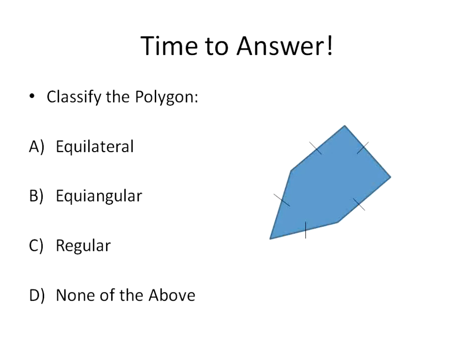Is this polygon equilateral, equiangular, regular, or none of the above? This is another example of an equilateral polygon — all five side lengths are the same. This one is a pentagon, an equilateral pentagon: five sides and all sides are congruent, the same measurement.